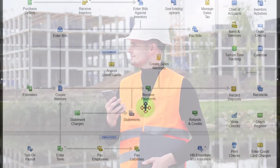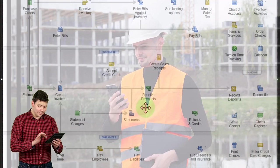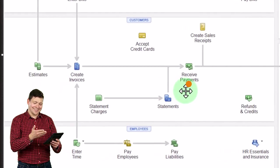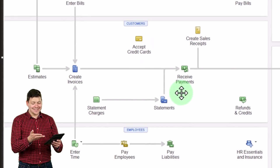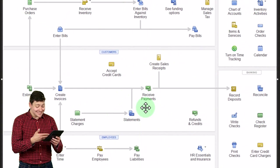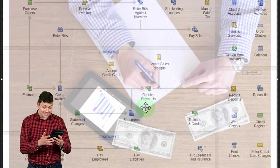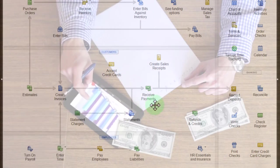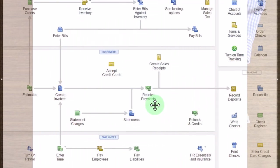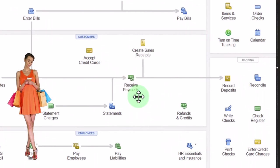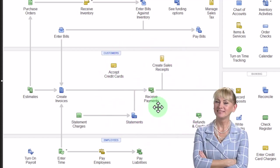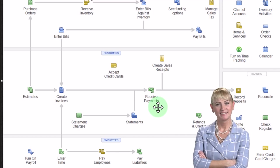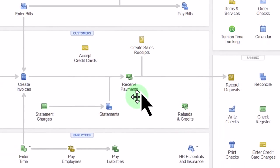Getting paid before you do the work happens in service-type situations with a subscription model - used to be magazines and newspapers, but now many application systems are set up that way. You pay for a year's subscription and they provide goods going forward, completing the contract in the future. From an accrual standpoint, you're going to debit cash and the other side should go into a liability account instead of a revenue account. Then periodically at the end of the month or year, you determine how much of that liability account - classically called unearned revenue - has been earned, taking it out of the liability and putting it into a revenue account. That's the classical adjusting entry for a book problem.